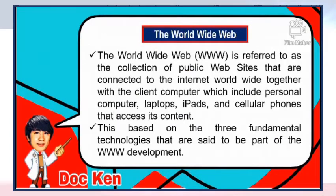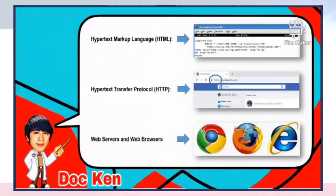Now let's move on to the World Wide Web, which refers to a collection of public websites connected to the internet. The WWW is composed of different websites such as Facebook and Google, and each website is composed of web pages such as a homepage. If a website were a book, then a webpage would be a chapter containing information. There are three fundamental technologies in World Wide Web development: number one is Hypertext Markup Language, or HTML, which is used to create web pages; and number two is Hypertext Transfer Protocol, or HTTP, which is used to interchange information seen on web pages.